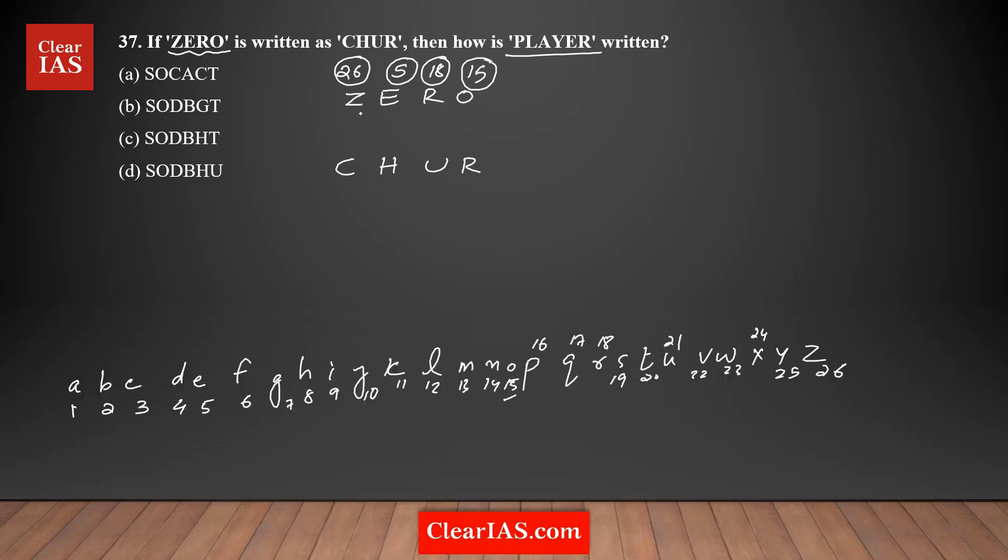So I need to find out the corresponding positions in the table for the coded word C, H, U, R. C is a third one, H is eighth, U is 21st, again R is 18.